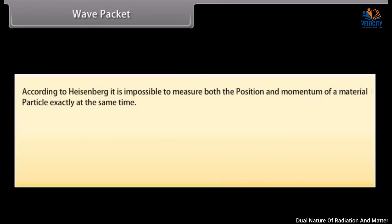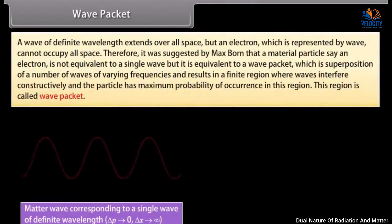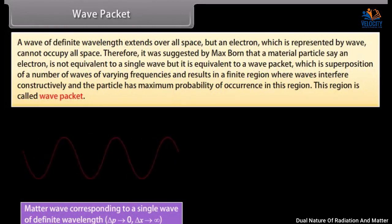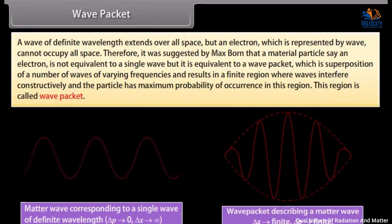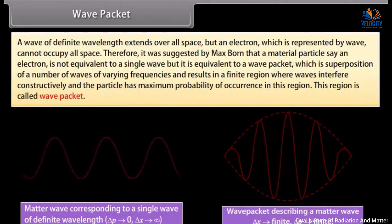According to Heisenberg, it is impossible to measure both the position and momentum of a material particle exactly at the same time. The product of uncertainties in simultaneous determination of position Δx and momentum Δp is of the order of ℏ, where ℏ = h/2π: Δx × Δp ≈ ℏ. A wave of definite wavelength extends over all space, but an electron represented by a wave cannot occupy all space. Therefore, it was suggested by Max Born that a material particle — say an electron — is not equivalent to a single wave but to a wave packet, which is a superposition of a number of waves of varying frequencies. This results in a finite region where waves interfere constructively, and the particle has maximum probability of occurrence in this region. This region is called a wave packet.